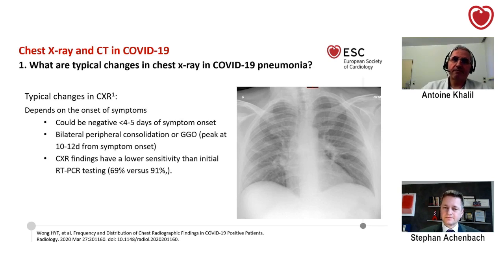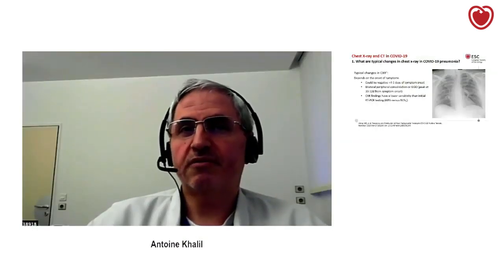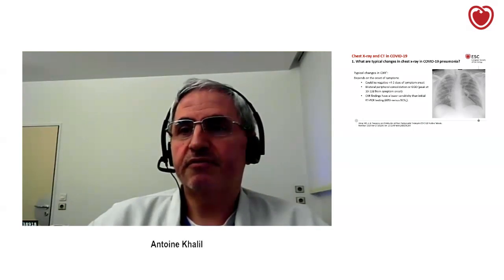We have to keep in mind that imaging could be negative within four or five days after symptom onset. The typical changes are bilateral peripheral consolidation or ground glass opacities, and we see the peak of abnormalities about 10 to 12 days after onset of symptoms. Compared to PCR, chest X-ray findings have lower sensitivity — patients can be symptomatic with disease and the chest X-ray can still be free of any typical signs. That's important to know.